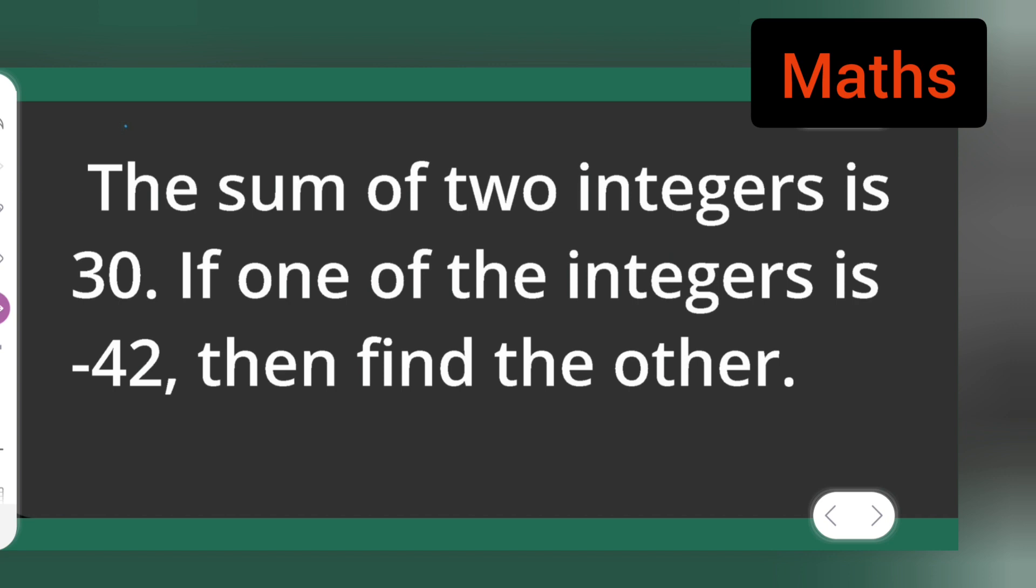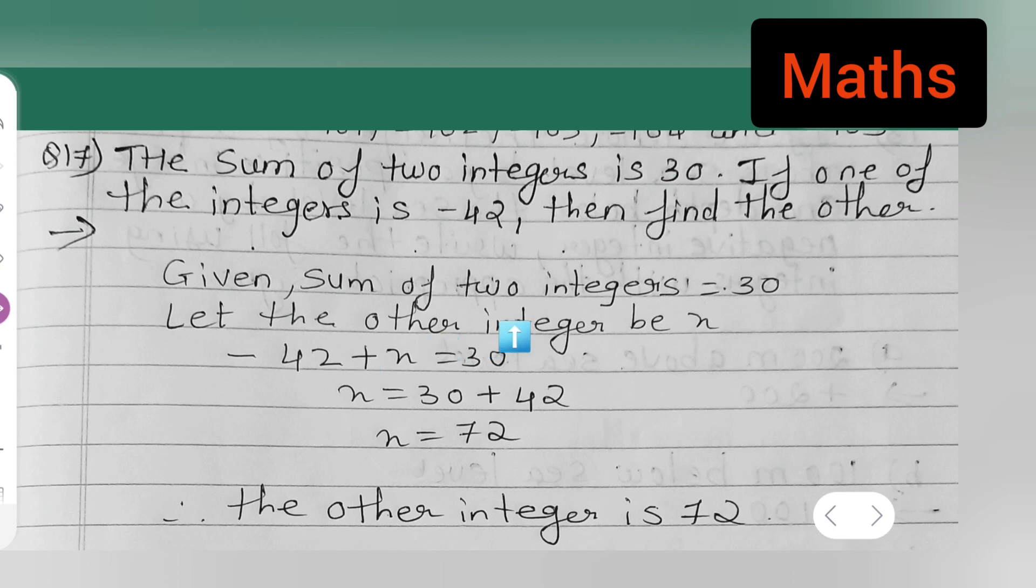You all can write down the question. The sum of two integers is 30. If one of the integers is -42, then find the other.